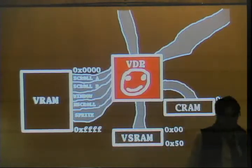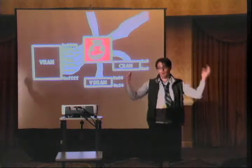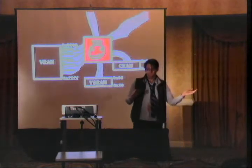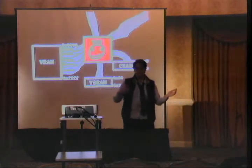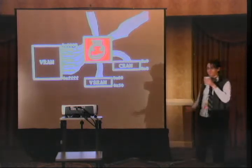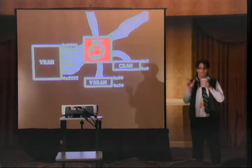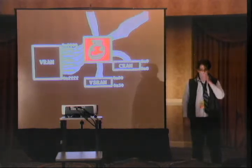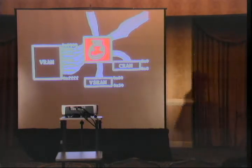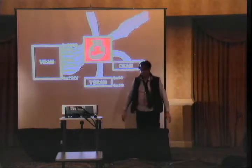Scroll B is the same thing but doesn't have a Window associated with it. HScroll is an area of memory that controls the horizontal scroll of every line, every eight lines, or the entire screen. You have three different modes to do this, and you select those modes with a register. VSRAM is the same thing but for vertical scrolling. You can select an entire screen or every two 16-bit patterns. The reason for that limitation is VSRAM is only 80 bytes long, so you can't have every line.